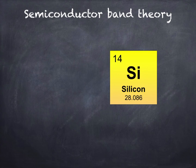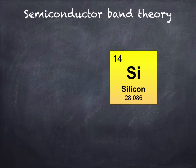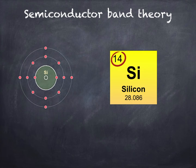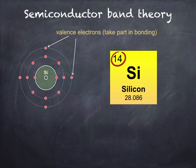First of all, we're going to look at the element silicon, although other semiconducting materials are available. Silicon has the symbol Si and an atomic number of 14, which means silicon atoms contain 14 electrons: two in the first shell, eight in the next, then four in the outer shell. We refer to these outer electrons as valence electrons — these are the electrons which can form chemical bonds.